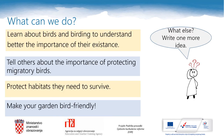What can we do? We can learn about birds and about birding to better understand the importance of their existence. We can tell others about the importance of protecting migratory birds. We can protect the habitats they need to survive, and we can make our gardens bird-friendly. Now stop for a second and think — what else can you do? Write one more idea in your notebook.